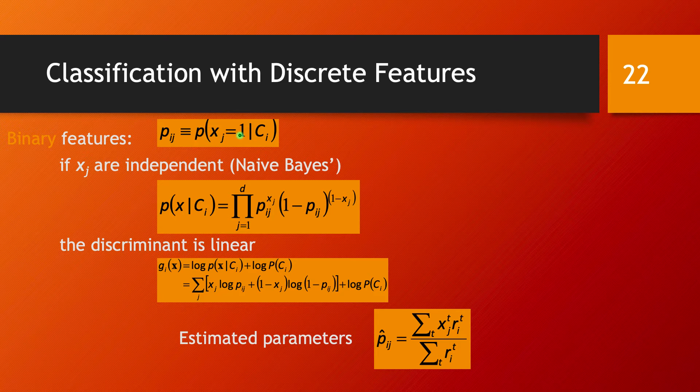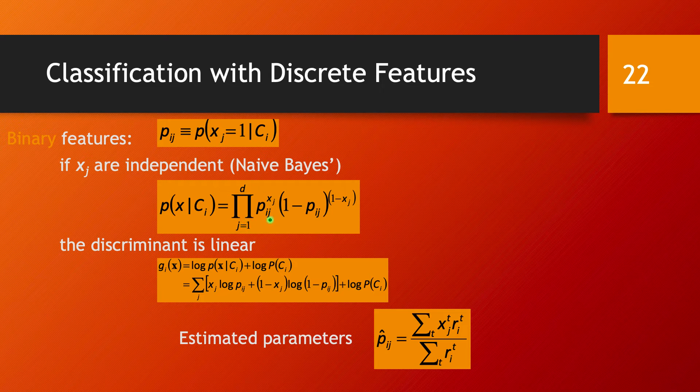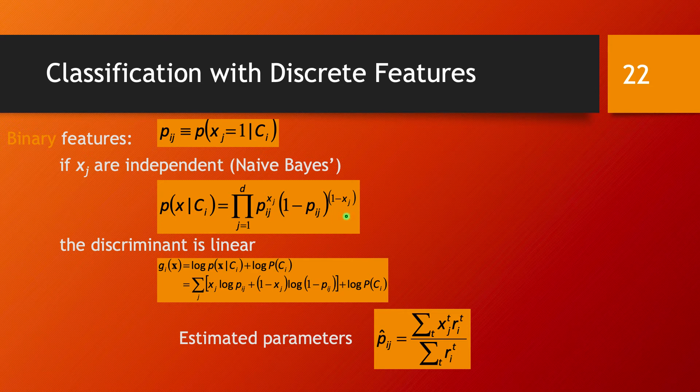If these features are independent—in other words, if we're in the case of a naive Bayes classifier—then this joint probability function is a product over each feature. It's the product from 1 to d of p_ij^(x_j) times (1-p_ij)^(1-x_j). This is something we had in the univariate case as well.